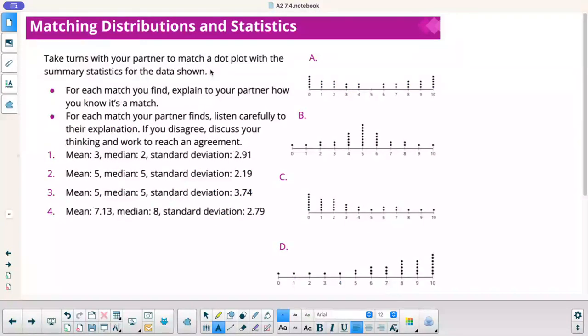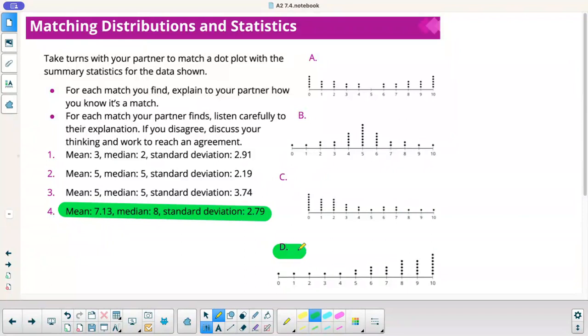Take turns with your partner to match a dot plot with the summary statistics for the data shown. For each match you find, explain to your partner how you know it's a match. For each match your partner finds, listen carefully to their explanation. If you disagree, discuss your thinking and work to reach an agreement. I look at this one here. D is definitely got most of its data over here to the right. I would say D probably has the one that is the biggest mean. So when I look at my mean here of seven, I can probably say that this one goes with D just because I know the mean is biggest here.